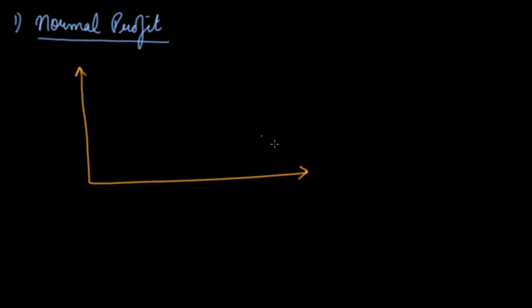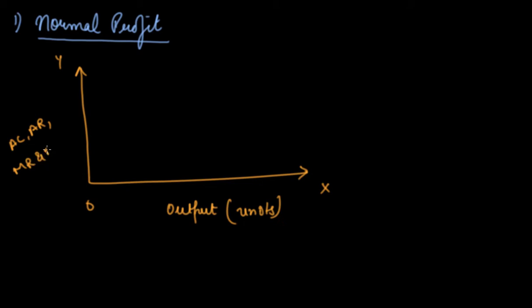In the case of normal profit, when this question comes you have to make the graph. On the X-axis you take output units, and on the Y-axis you take AC, AR, MR, and MC. Under perfect competition, your AR is equal to MR and they are constant, forming a straight line. The producer is in equilibrium when MC cuts AR from below and MC is equal to MR.